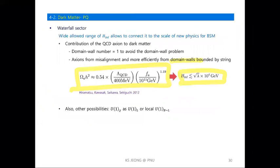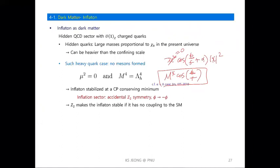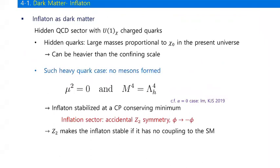An audience member asks about the dark matter connection: you said the heavy quarks are decoupled, so there is no meson, and μ² equals zero. So during inflation you have mesons in the effective theory with a non-trivial contribution to μ². How do you change the meson from light to heavy — somehow you are changing the quark masses during evolution?